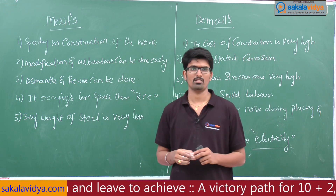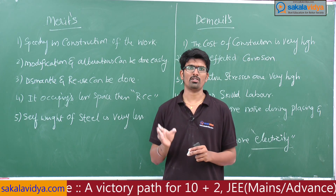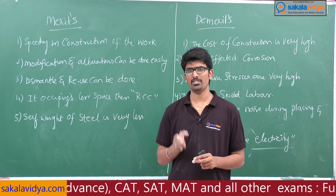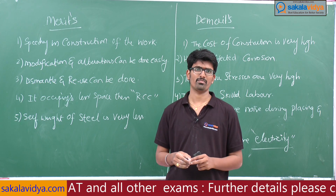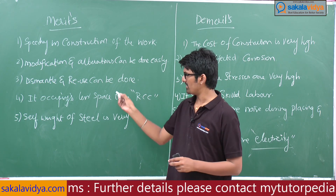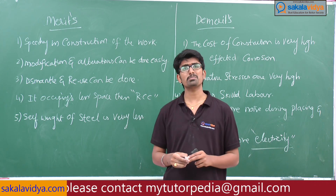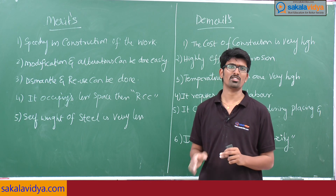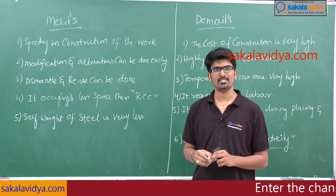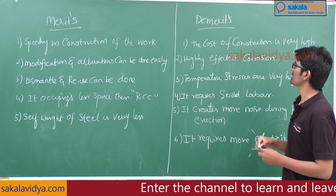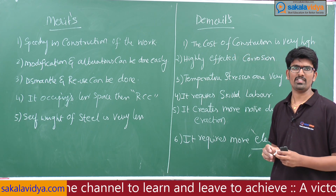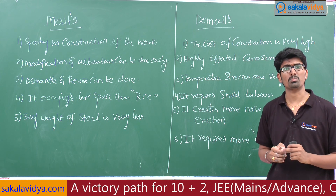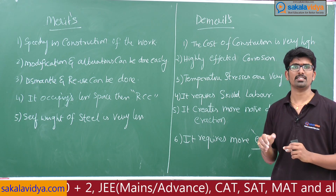Regarding dismantling and reuse: after construction, if you are not satisfied, steel materials can be reused in the next construction. In RCC, after dismantling it is just scrap with no reuse value. Steel has a good scrap value. Steel structures also occupy less space than RCC, which is why they are used in industries and warehouses for large spans. The self weight of steel structures is very less compared to RCC. For demerits: the cost of construction is very high compared to RCC. Steel is highly affected by corrosion, so proper precautions must be taken, which also increases cost.